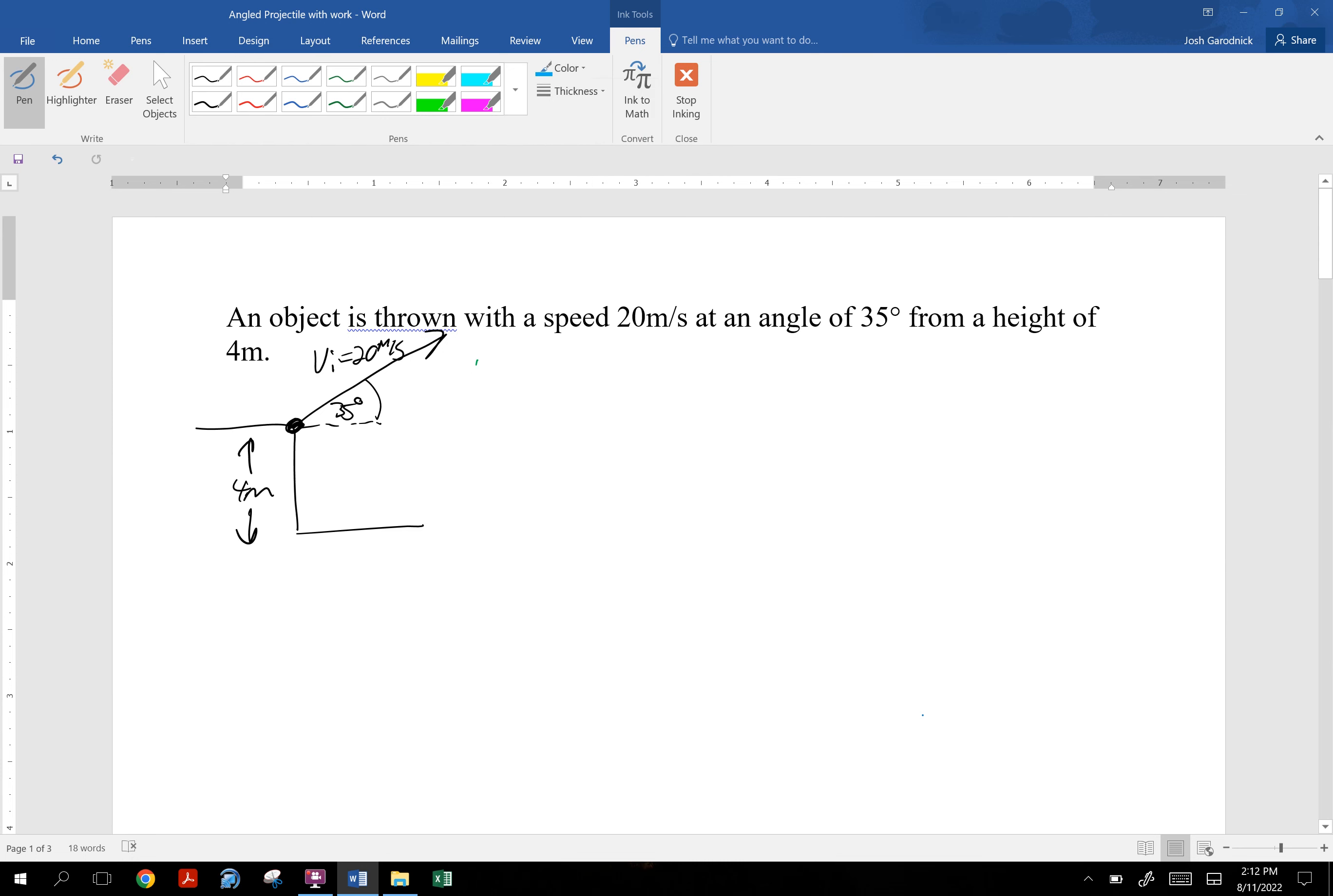Bottom line, this 20 meters per second is at an angle of 35 degrees. Therefore it's not 20 meters per second to the right or straight up. It is a combination of to the right and up in this case. So it has a velocity in the X and a velocity in the Y.